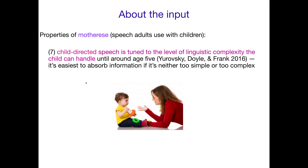It's easiest to absorb information if it's neither too simple nor too complex. Too simple and you might be bored and not pay attention; too complex and it's too hard to follow. Getting that sweet spot is very important for kids to maximize the information they can extract from the linguistic signal. This is a natural property of child-directed speech — it seems to naturally be tuned to the right level of linguistic complexity.